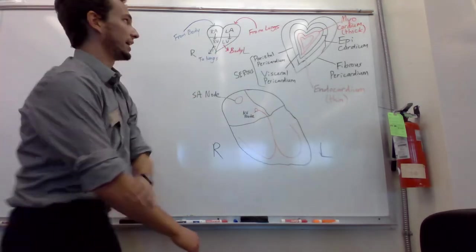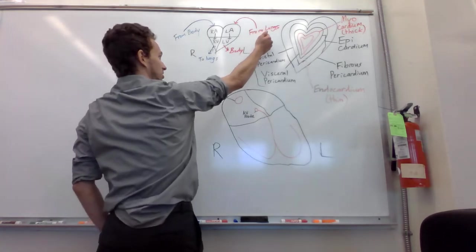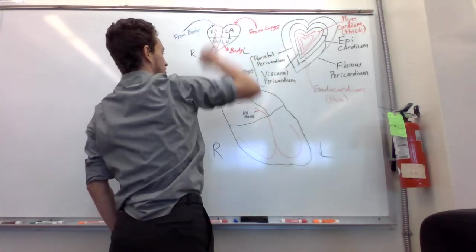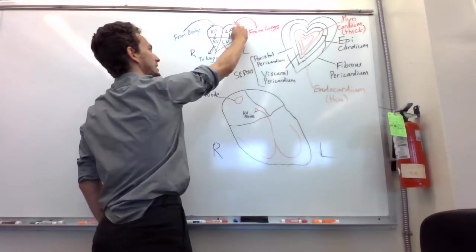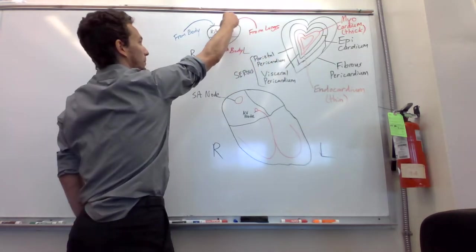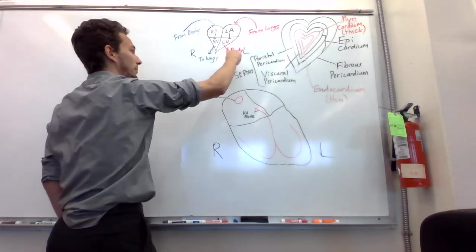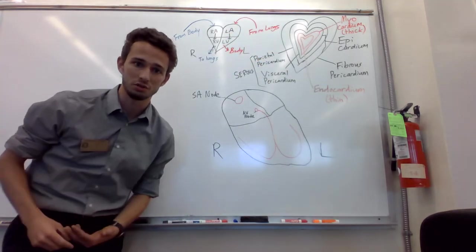Whereas on the other side, this blood is coming from the lungs. So once it gets to the lungs, goes to the lungs, gets oxygen, comes back from the lungs to the left atria, which will pump to the left ventricle and then pump to the body to feed the body's tissues.